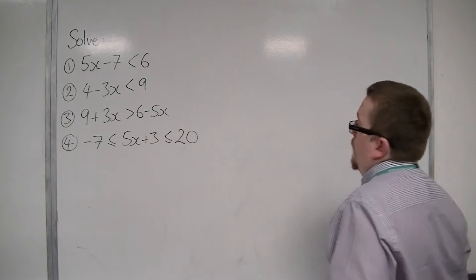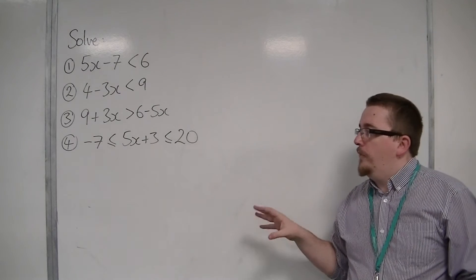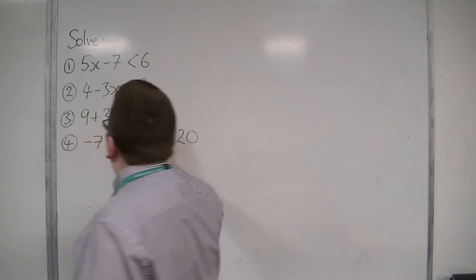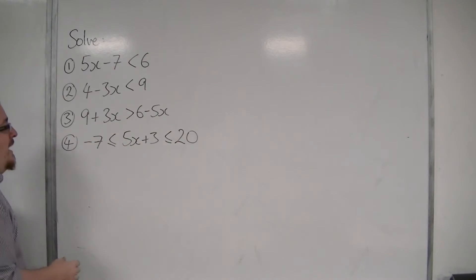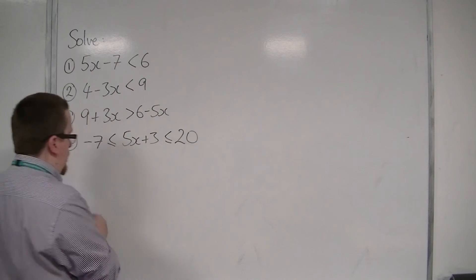Now finally, number 4. Minus 7 is less than or equal to 5x plus 3 is less than or equal to 20. When solving an inequality like this, you'll notice that it has three sections. And you deal with each section in exactly the same way.